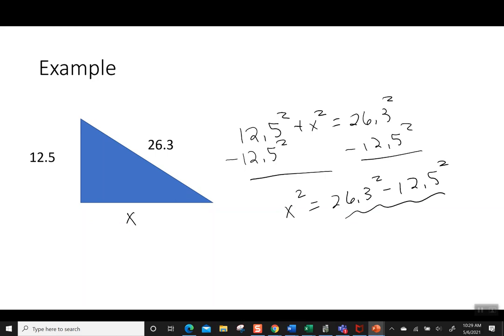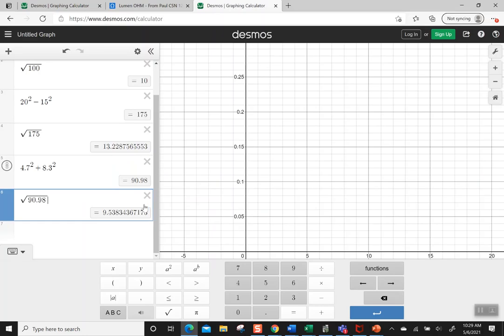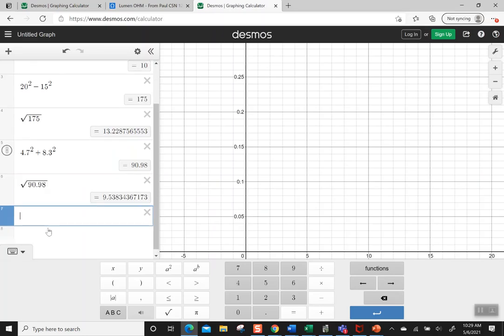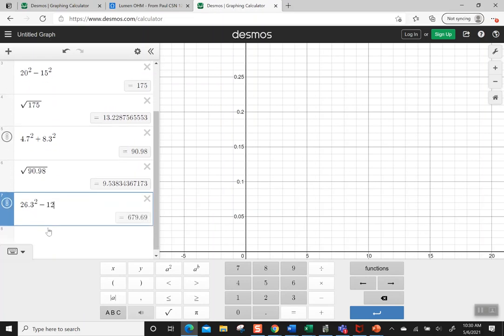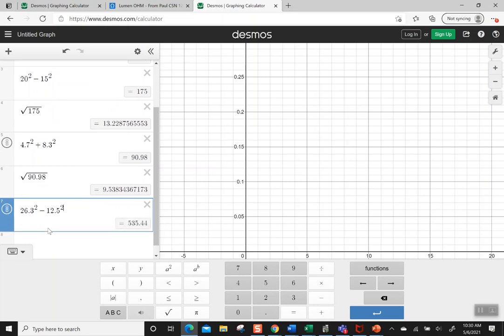So this is exactly what I'm going to put into Desmos, 26.3 squared minus 12.5 squared. So 26.3 squared minus 12.5 squared says 535.44.